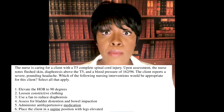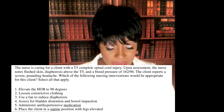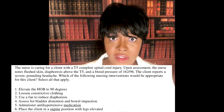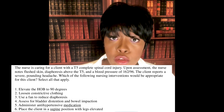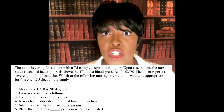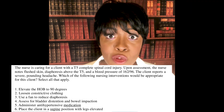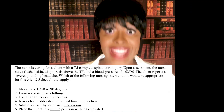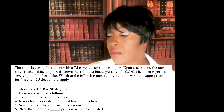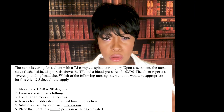Choice five — administer an antihypertensive medication: absolutely. This patient's blood pressure is through the roof and they could stroke out. Choice six — place the client in supine position with legs elevated: no. You do that when the patient is in shock and you're trying to bring blood pressure up. This patient's blood pressure is too high — we're trying to bring it down. So we elevate the head of the bed; we do not elevate the legs.